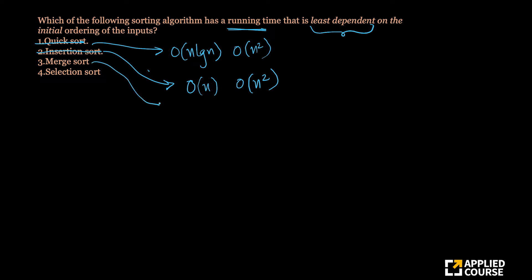What about merge sort? Whatever happens, merge sort still has to do the n log n, whether it is a best case, worst case, average case. In every case, its time complexity is order of n log n. So merge sort is a potential answer.